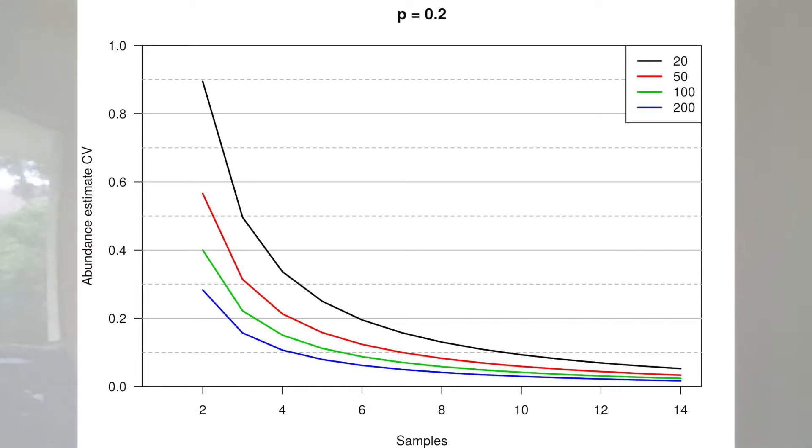For example, if we're trying to achieve a coefficient of variation of 0.1 or 10 percent, which means our standard error is 10 percent of the size of the estimate itself, if we have a population size of 200 animals, this graph would suggest that we want to be sampling the population about four times when that capture probability is about 0.2.